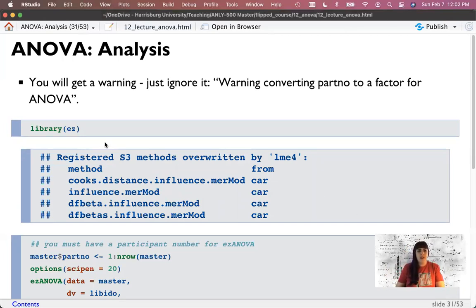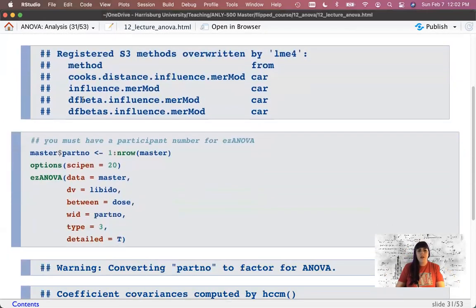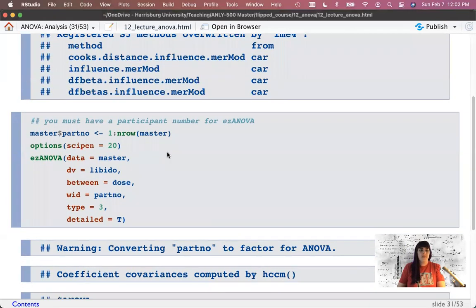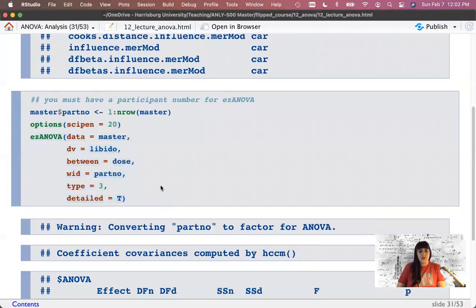All right. So I am opening EZ. It's giving me a little bit of a conflict between packages here, but that's okay. And I'm going to add a participant number here by just saying, okay, my participant number is count up one to the number of rows. So let's just count one, two, three, four. I've said give me more decimals, because otherwise this whole thing is in scientific notation.